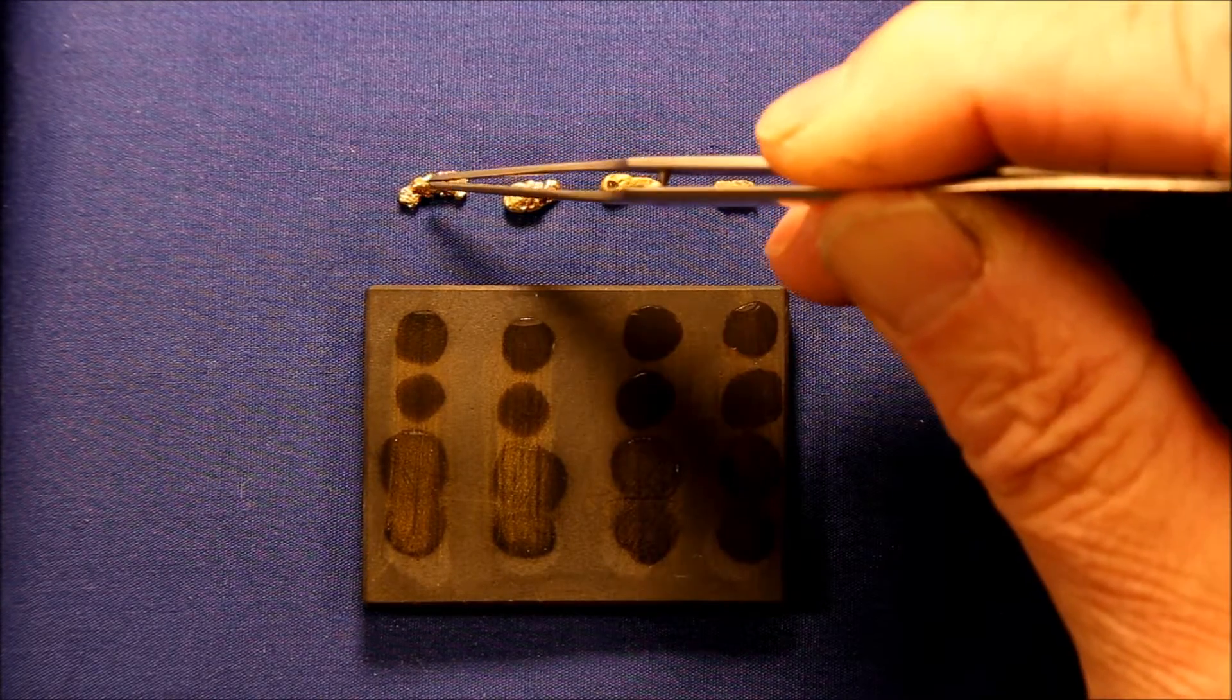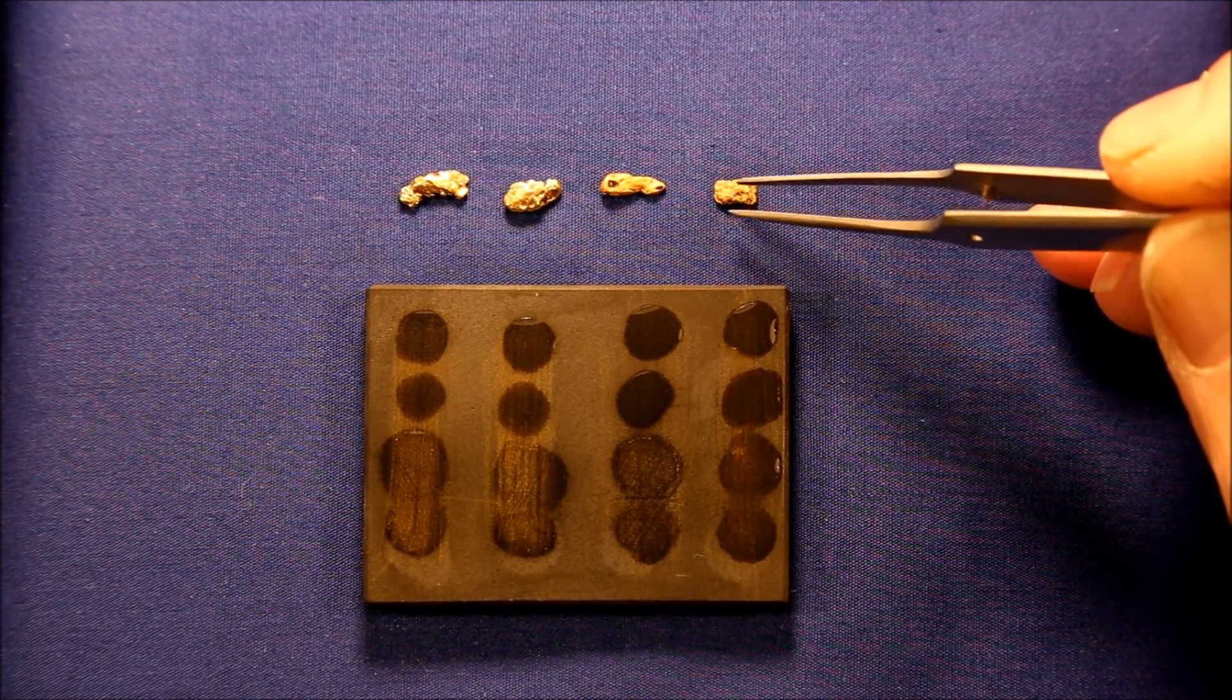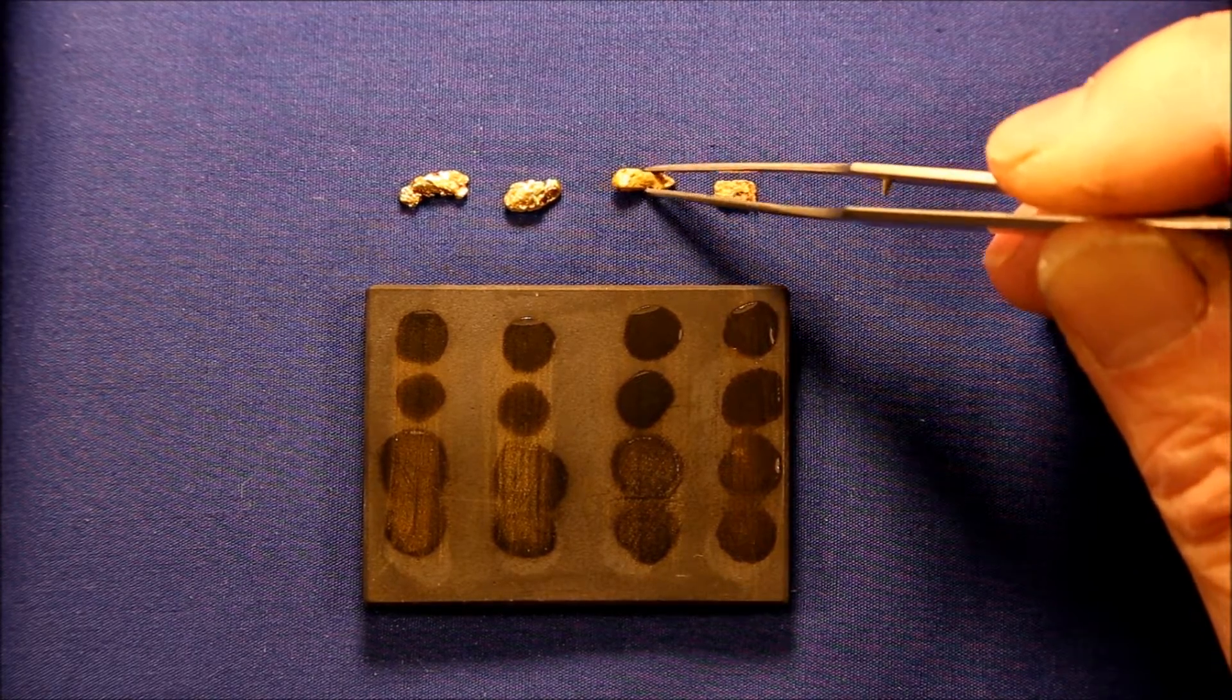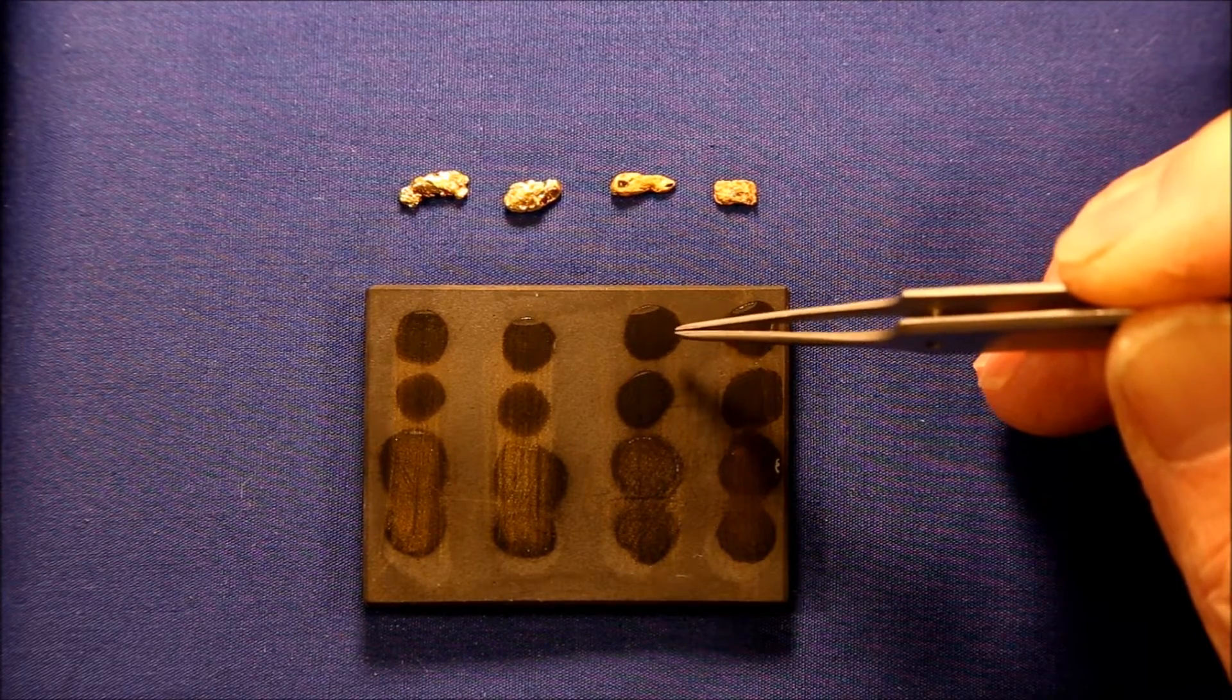So what that's telling me is that this, this and this last one are all 22 carat or higher gold. And this one piece is less than 18. And that's how you can test gold for purity.